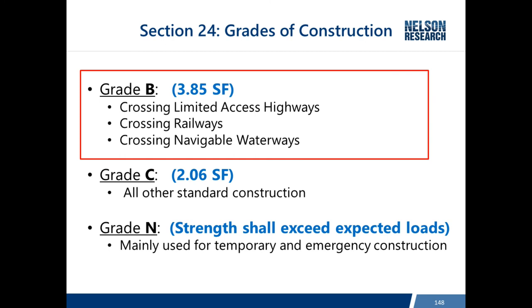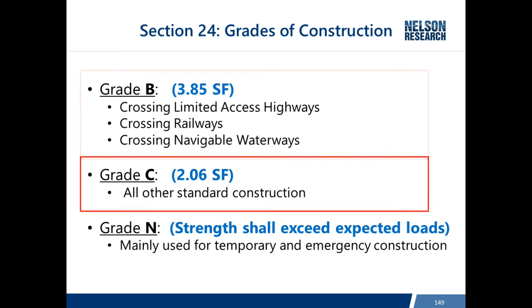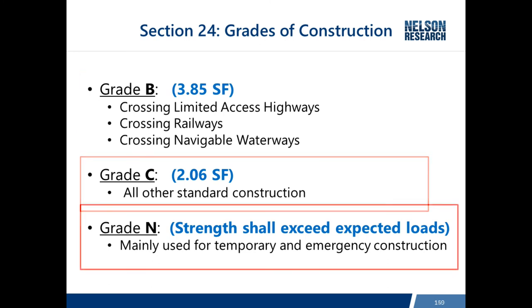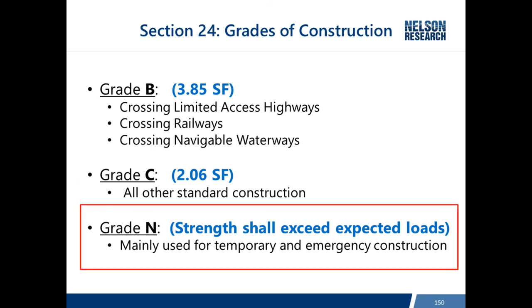Within Section 24, there are three grades of construction. Grade B, the highest grade, is only required if you're crossing limited-access highways, railways, or navigable waterways. Grade C is applied for all other standard construction, and Grade N is used for emergency or temporary construction — defined as the strength shall exceed expected loads.